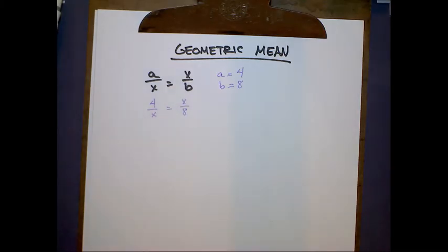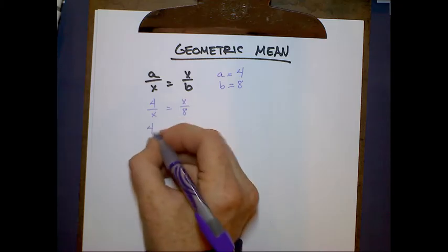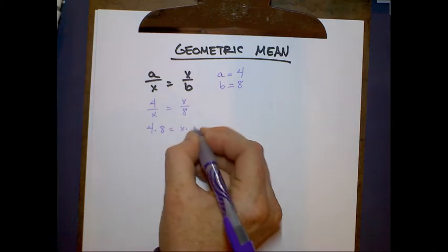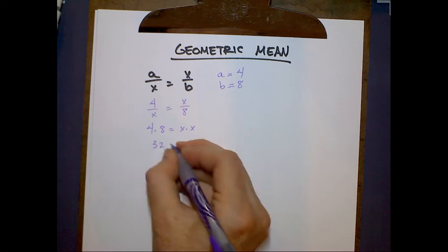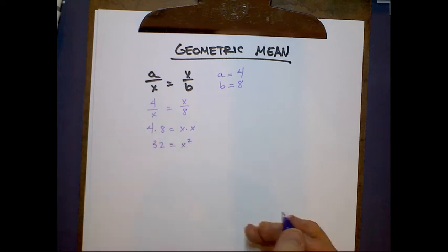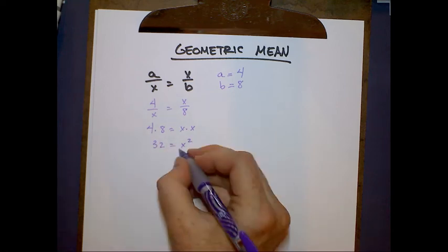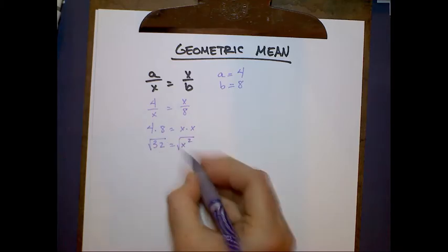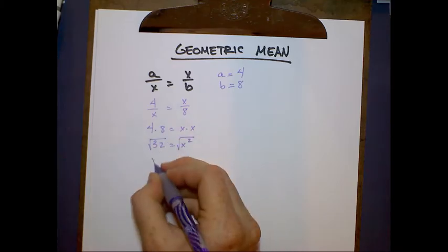In order to solve for x, we would have to cross multiply and then simplify. And then to isolate x, we need to take the square root of both sides.